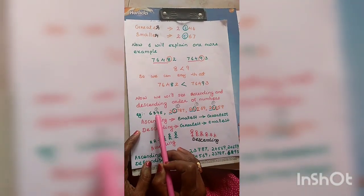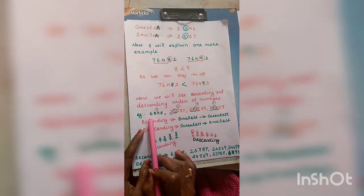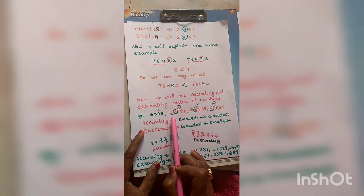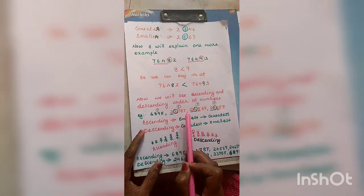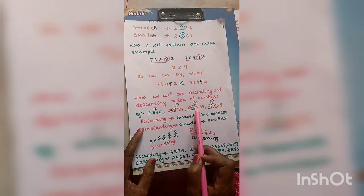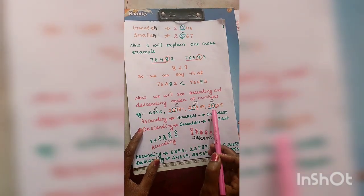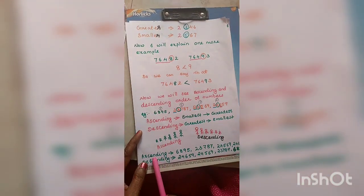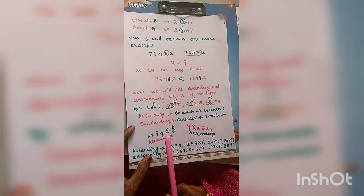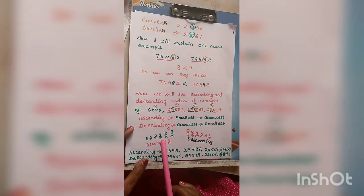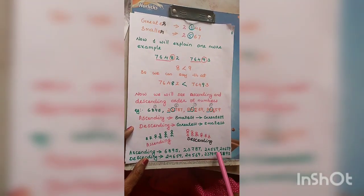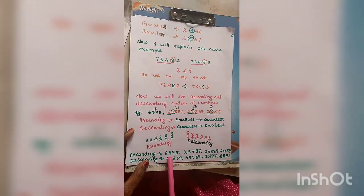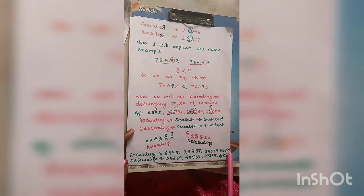The smallest number is 6,895. The next smallest is 23,787. Then 24,569. And the last number is 24,659. In ascending order, you arrange the smallest number first, then the others accordingly. I have arranged all these numbers in ascending order — first, second, third, and fourth number.